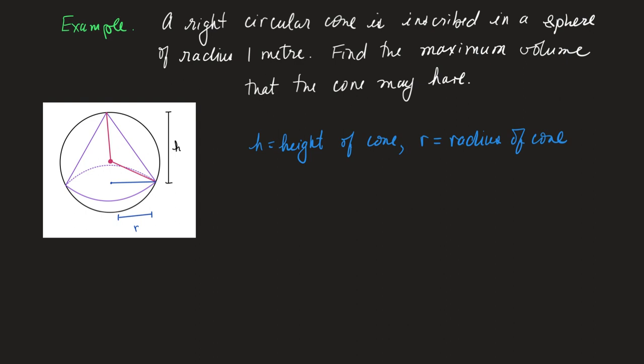First let me label that radius. This is 1 and this is also 1. Now I need to get a formula for the volume in terms of one variable. I know that the volume of a cone is 1/3 π r² h. But if I want to maximize the volume, I'd like to get this in terms of one variable so that I can differentiate and use a technique for finding the maximum volume. I'd like to get h in terms of r or r in terms of h, and it would be even better if I could get r² in terms of h.